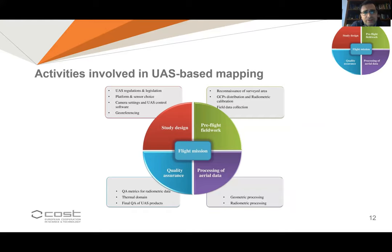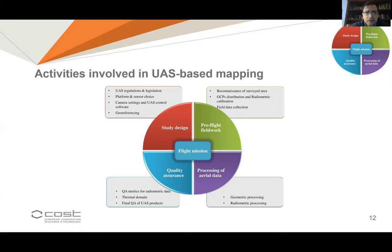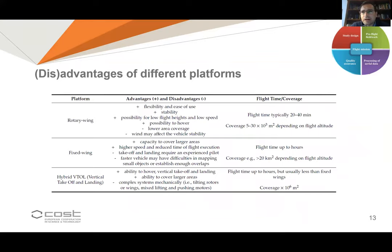For this reason we developed guidelines — suggestions and advice about what should and should not be done — using mainly our experience but also an extensive literature review. This literature review has been divided into five stages required in each UAS-based application: the flight mission, the study design, the pre-flight fieldwork, the processing of aerial data, and the quality assurance.